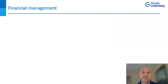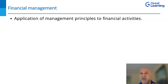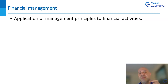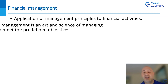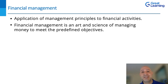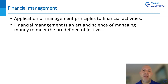Financial management is the application of management principles to financial activities. How do you operate from a management philosophy? What philosophies do you put in place? You need to understand — you have to have a plan, a financial plan on how you're going to achieve certain directives. Financial management is an art and a science of managing money to meet predefined objectives. Think about yourself — you want to save money for retirement. How are you going to manage your money to achieve those objectives?